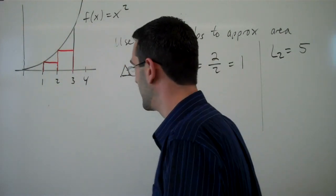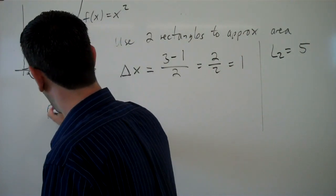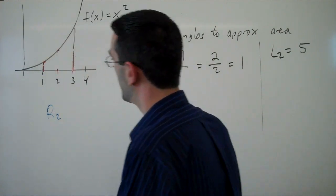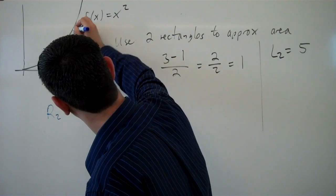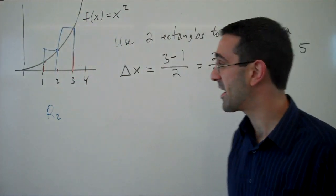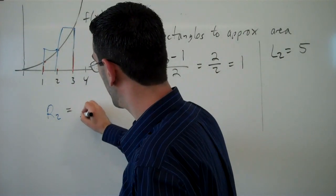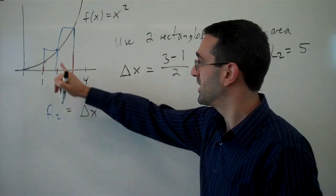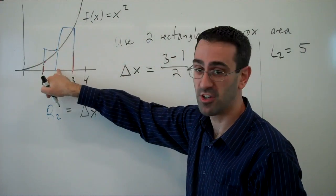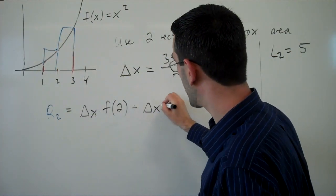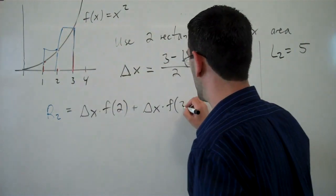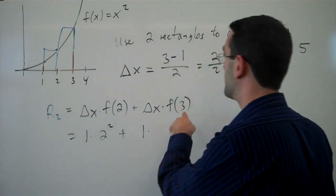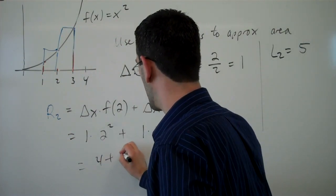The other option would be to do a right endpoint approximation with two subdivisions. This would mean instead of putting my rectangles touching the curve on the left, we would draw my rectangles so that they touch the curve on the right side of the interval. The width of each rectangle is still delta x, but when I find the height of my first rectangle, we use the function value at 2, because this rectangle is touching the curve at f(2). For my second rectangle, the height is going to be the function value at an input of 3. My delta x is 1, f(2) is 2 squared equals 4, delta x is 1, and f(3) is 3 squared equals 9. We get 4 plus 9 is 13.